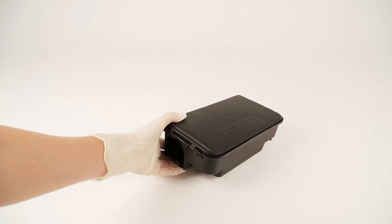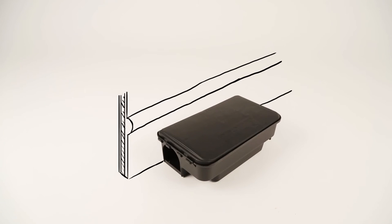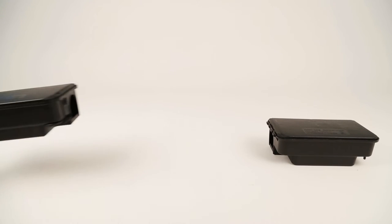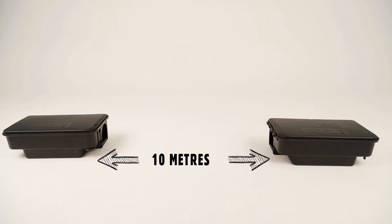Position the bait station against a wall with the entry hole adjacent to the wall where there are signs of rodent activity. In large treatment areas or where there is a severe infestation, place the bait stations up to 10 meters apart.